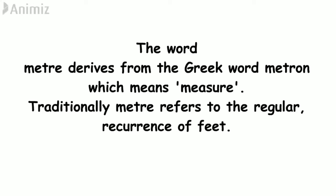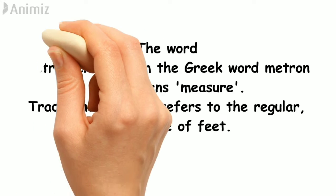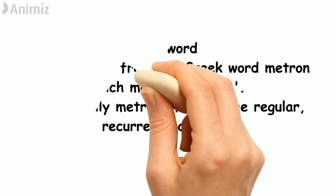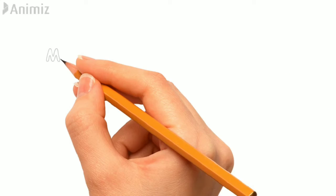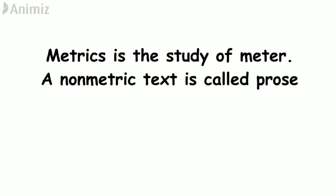Metrics is nothing but the study of meter. A non-metric text is called prose — quite simple. The presence of rhythm in a particular text or verse makes it poetry, and the absence of rhythm makes it prose. So a non-metric text is called prose.